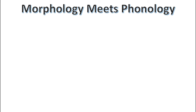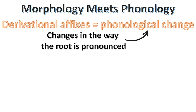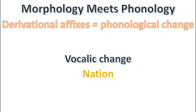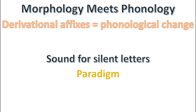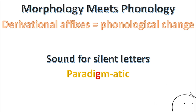An important aspect of derivational morphology is how it interacts with phonology — the way that words are pronounced. The attachment of a derivational affix often results in phonological change, or a change in the way the root is pronounced. For example, a derivational affix can shift the syllable stress pattern: the root 'titan' has stress on the first syllable, but when the suffix -ic is added, the stress shifts to the second syllable, as in 'titanic.' Derivation can also lead to vocalic change — a change in the vowel sound in the root. When the suffix -al is added to the root 'nation' to create 'national,' the 'ay' sound shifts to an 'a' sound. Derivation can also lead to the pronunciation of silent letters: in 'paradigm' the g is silent, but in the derived form 'paradigmatic,' the g is no longer silent.